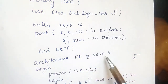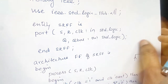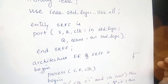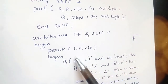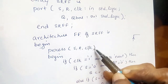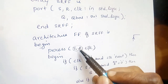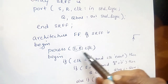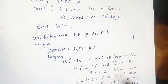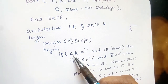We write 'begin' to start the architecture. Here, the device will only be activated when it detects a clock edge, so we use a process statement. The sensitivity list includes the clock signal — S and R are not strictly necessary but including them will not cause an error. We write 'begin', and then use an if statement to check the clock pulse for a positive edge.